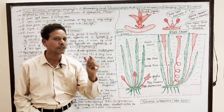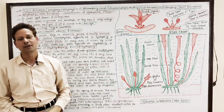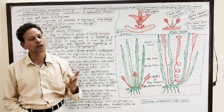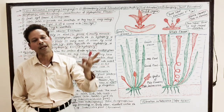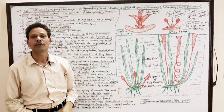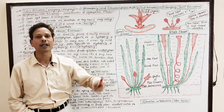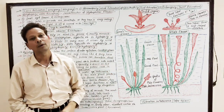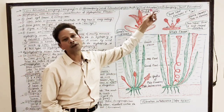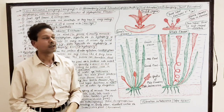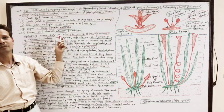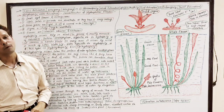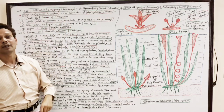Dear students, this is the fourth lecture on pollination. Before this lecture, we have discussed self-pollination, cross-pollination, and different types of cross-pollination like anemophily (wind pollination), ornithophily (pollination carried by birds), and entomophily (insect pollination). In this lecture, we will discuss some more types of cross-pollination: geitonogamy and allogamy.